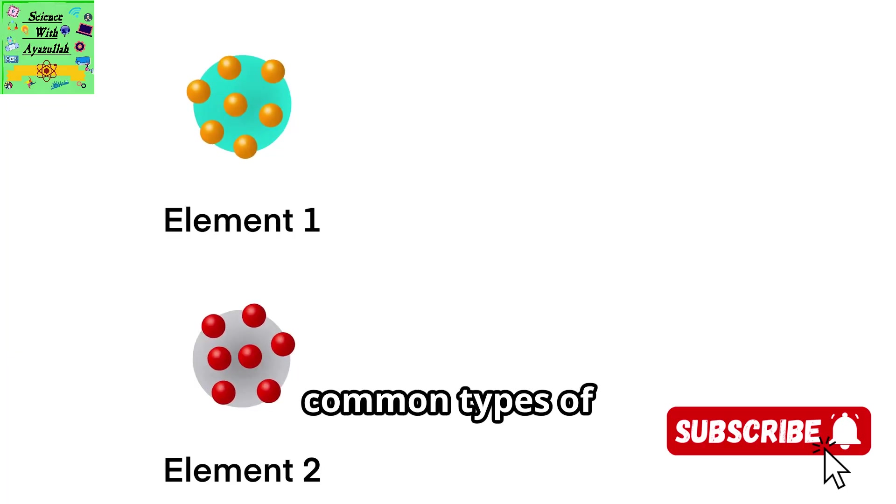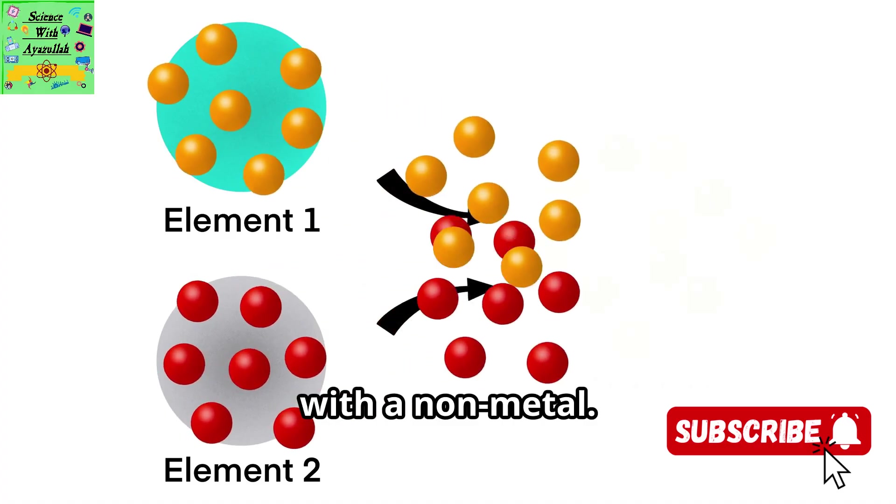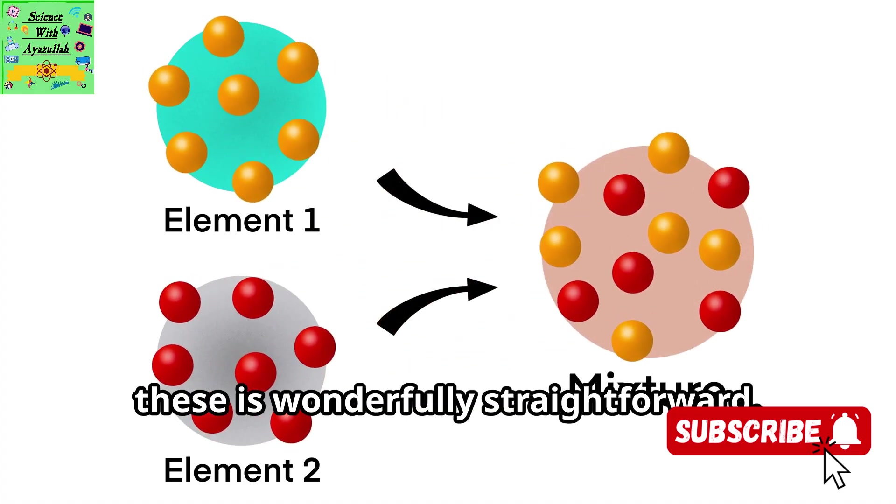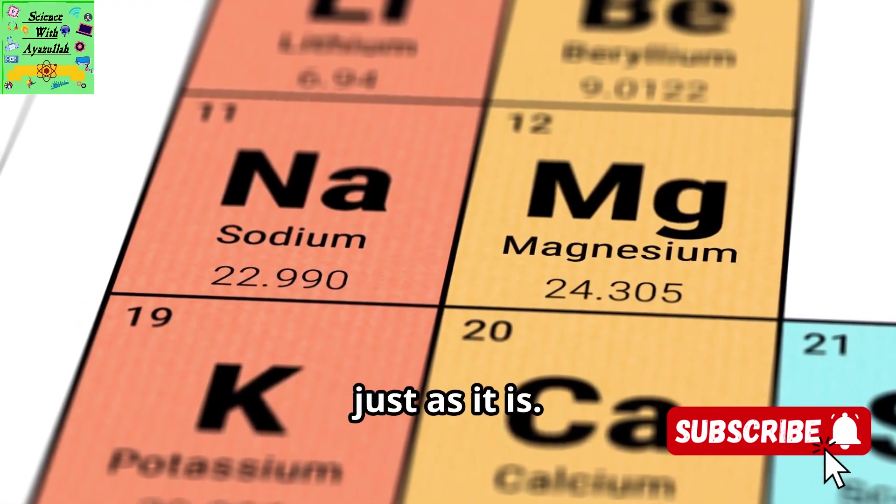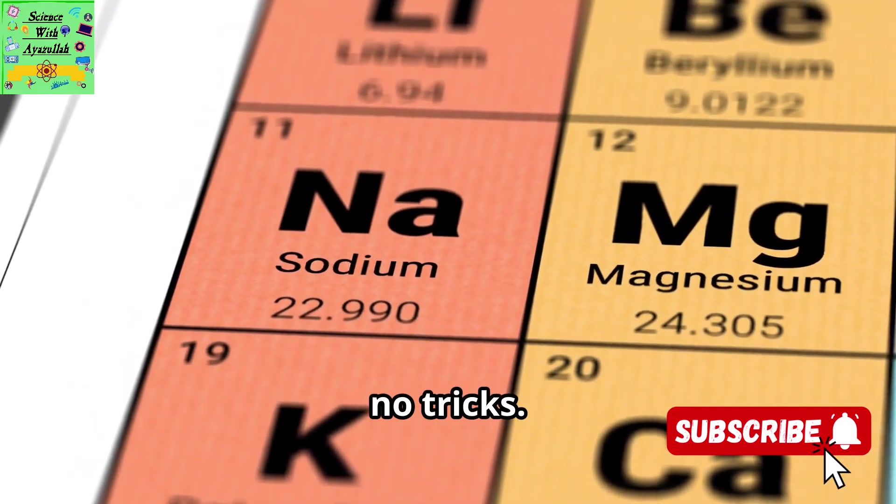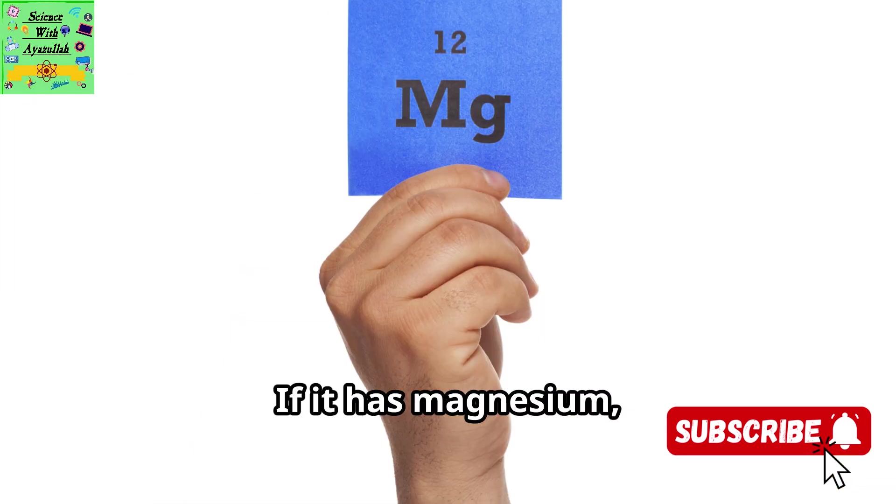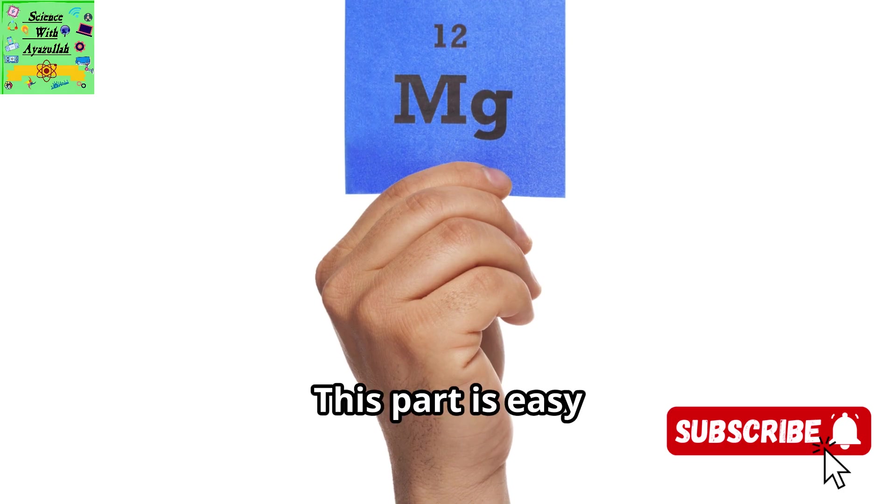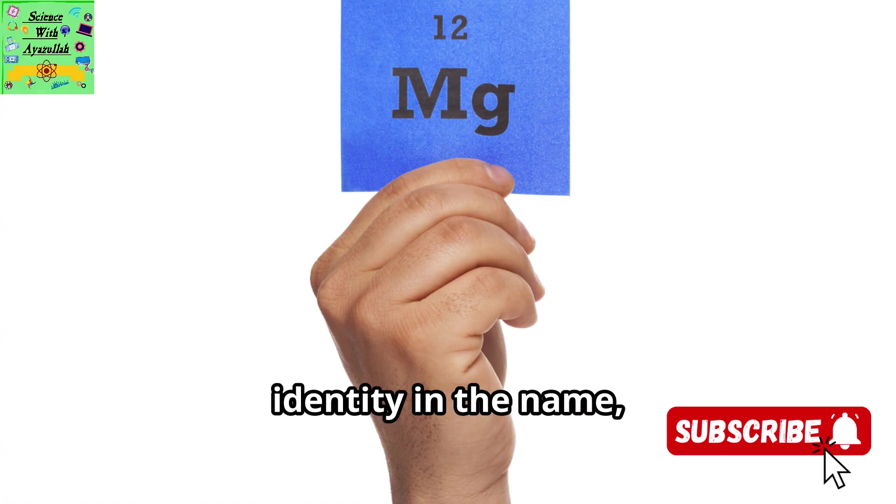One of the most common types of compounds forms when a metal teams up with a nonmetal. The rule for naming these is wonderfully straightforward. First, you say the name of the metal element just as it is. No changes, no tricks. So, if your compound has sodium in it, you just start with the word sodium. If it has magnesium, you start with magnesium. This part is easy to remember because the metal gets to keep its original identity in the name.